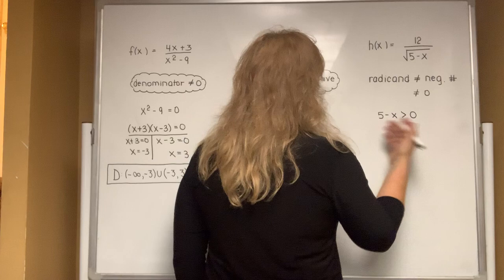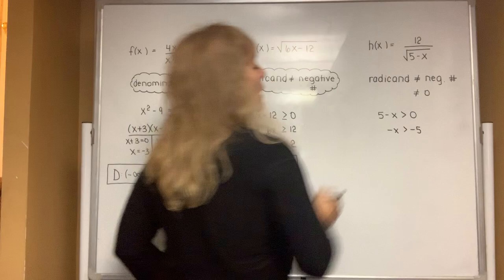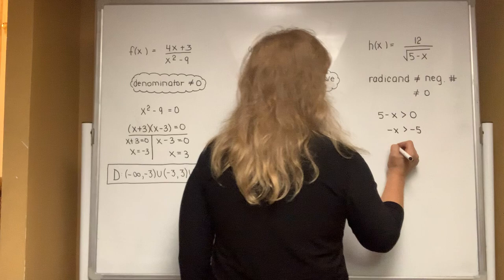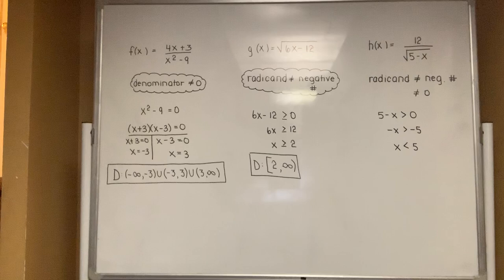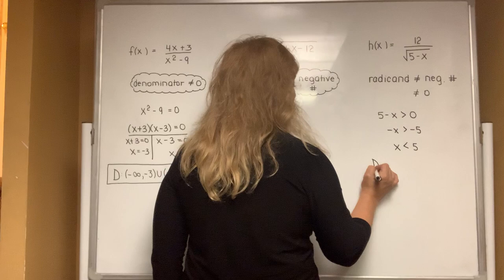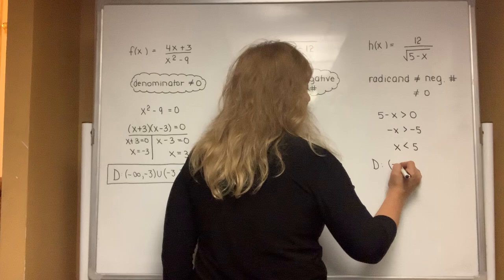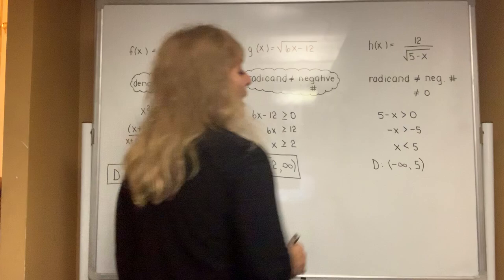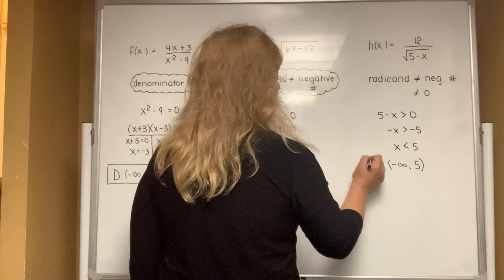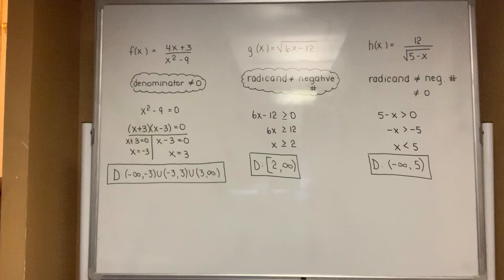If you move the 5 to the other side, you get negative x greater than negative 5. When you divide by a negative number, remember you have to flip the direction of the inequality. So dividing by a negative flips it to x less than 5. Any x value less than 5 is part of the domain. In interval notation, the domain goes from negative infinity up to but not including 5, so you use a parenthesis: (−∞, 5).